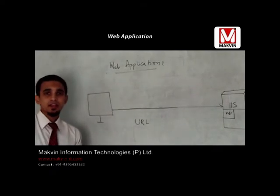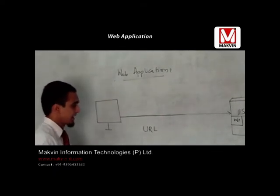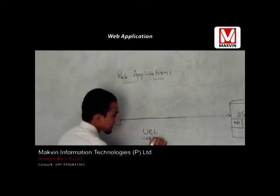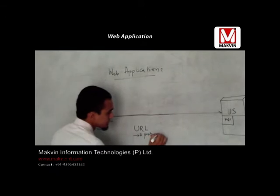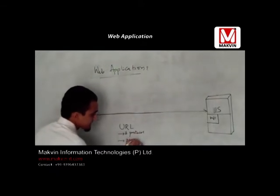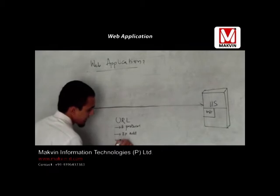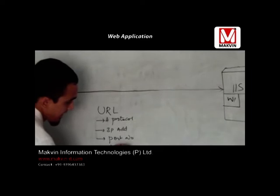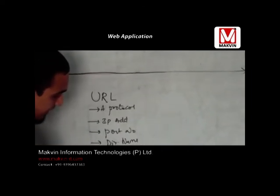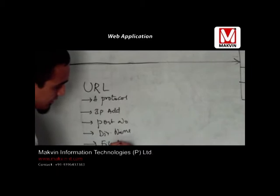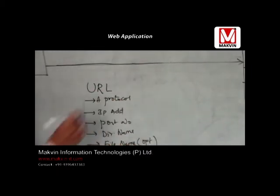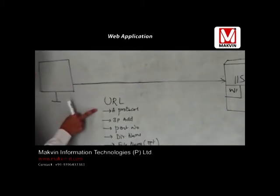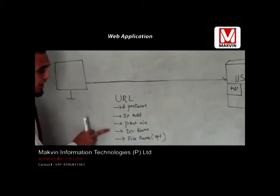What does a URL contain? A URL contains a protocol, an IP address, a port number, a directory name, and a file name — which is optional. So the main things a URL contains are: a protocol, an IP address, a port number, and a directory name.